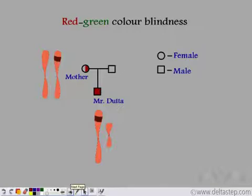Now see, Mr. Dutta had red-green colour blindness. His mother was a carrier for the disease. So the red-green colour blind gene came from his mother and the Y chromosome came from his father, and that is how he became diseased.